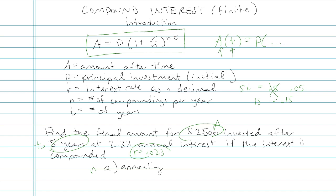Whoops, I messed up already. Sorry guys, I told you this $2,500 is the amount after time, but we're trying to find the amount after time. That $2,500 is the principal. That's how much you invest in the first place. Sorry about that.